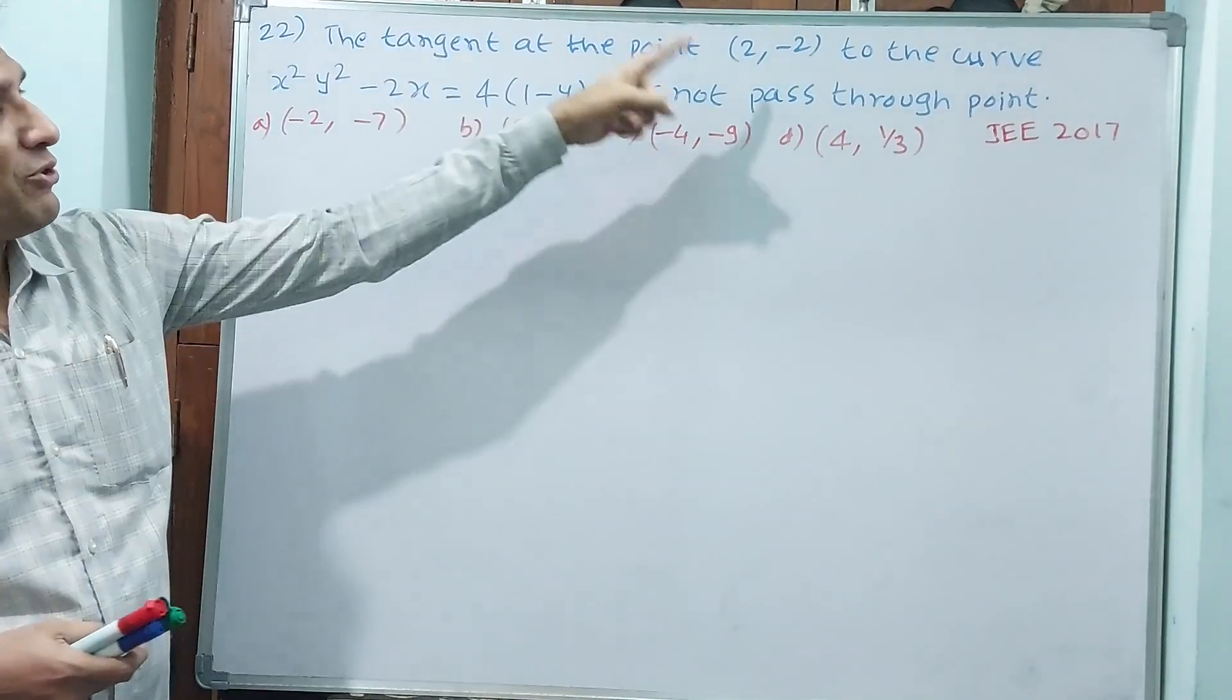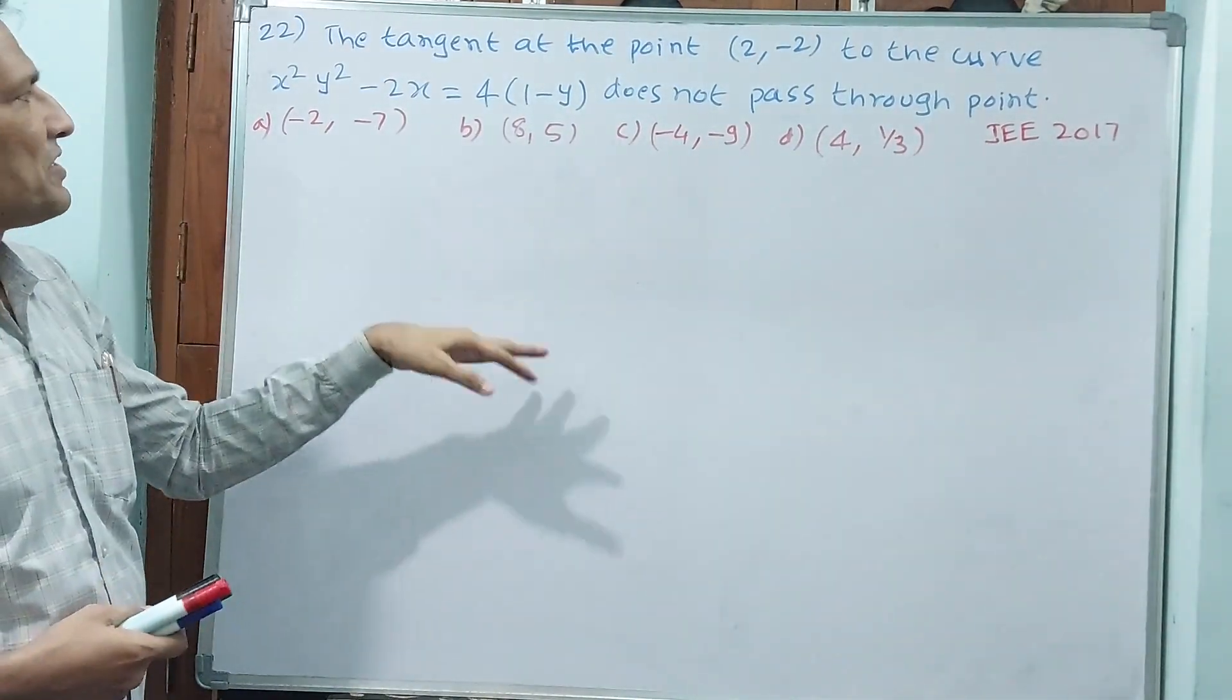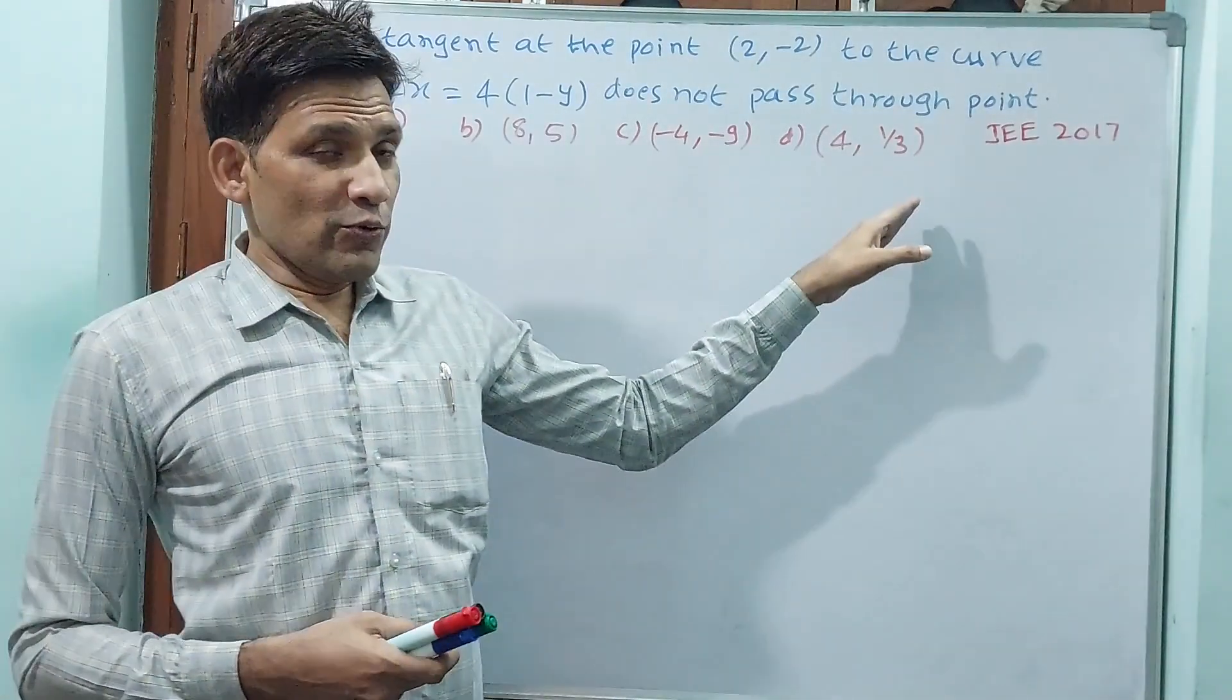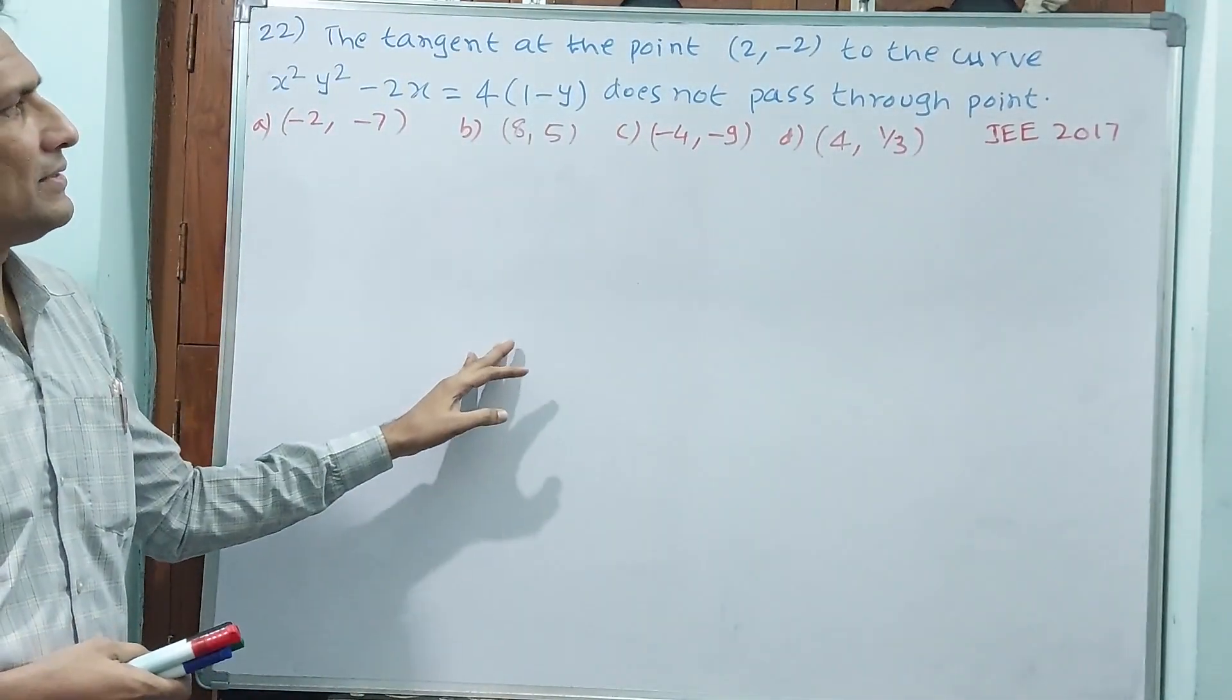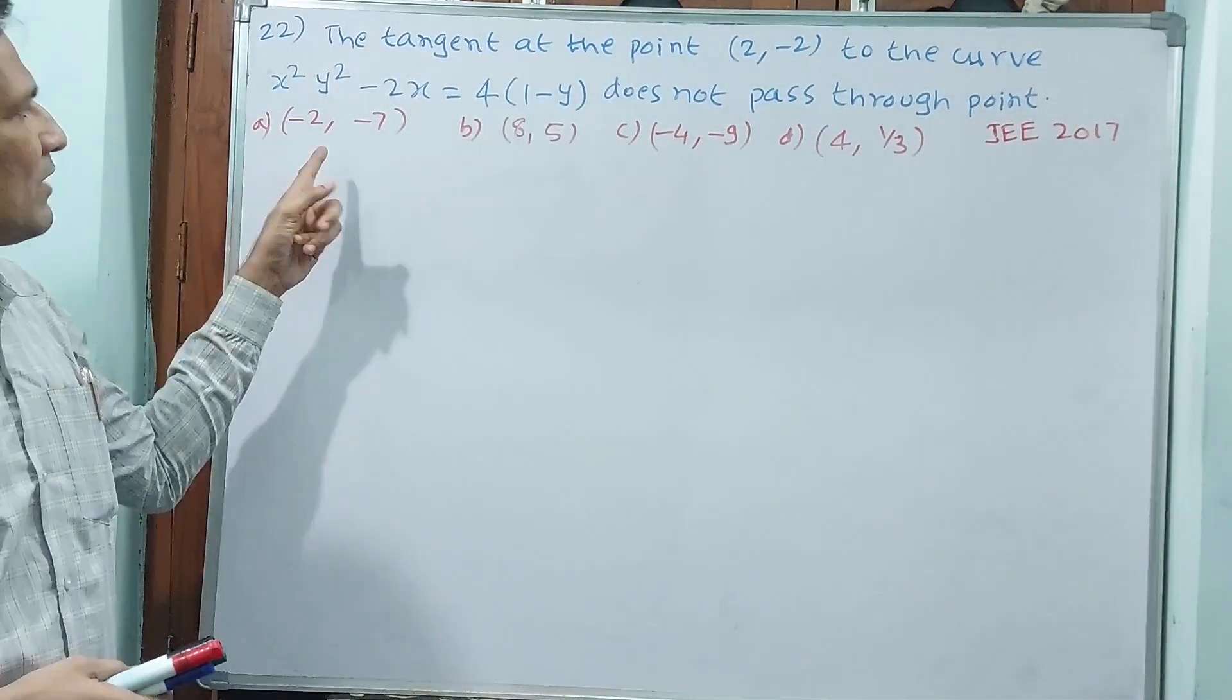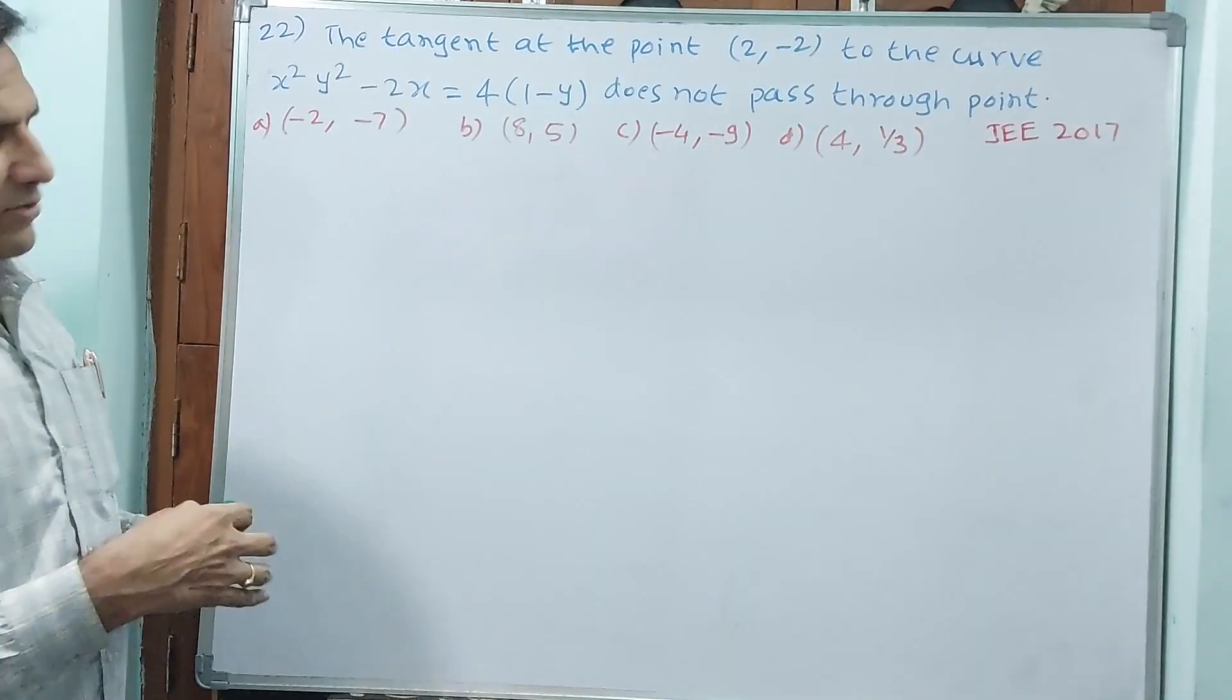Differentiate this and substitute that point. Of course, you make equation. In that equation, these 4 points, at least 1 point, that means 1 point will not pass. It does not satisfy. What is that point like? Answer is this one directly, only A. Let us try to solve this.